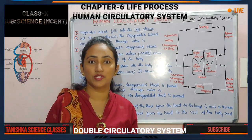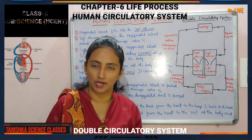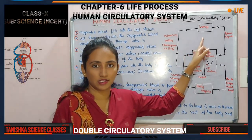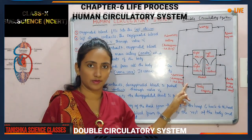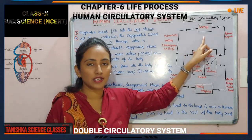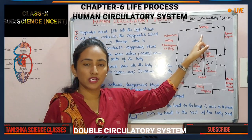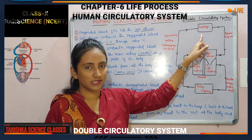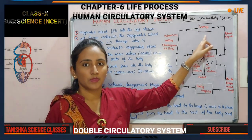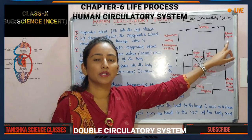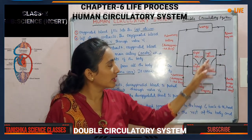What happens first? In the respiratory system, in the place of the lungs, blood will be oxygenated. We inhale oxygen and that oxygen will be mixed into the bloodstream, so that blood is called oxygenated blood. I have drawn a simple structure of the circulatory system on the board here. In the lungs, blood will be oxygenated.